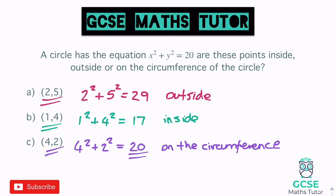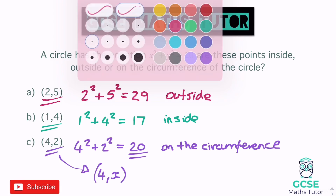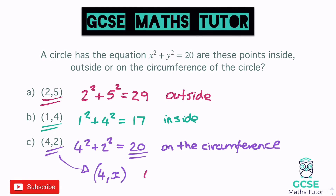This is handy if we only know one of the coordinates. For example, if we only knew the coordinate was (4, something), we could find the missing value because we know it has to equal 20. We'd get 4 squared plus x squared equals 20 — 4 squared is 16, take away 16 from both sides and we get x squared equals 4. Square rooting that gives x equals 2. If the number's bigger it's outside; if it's smaller, it's inside.